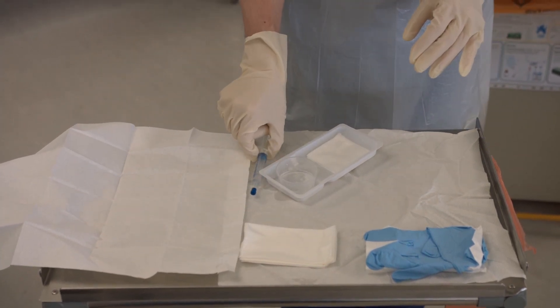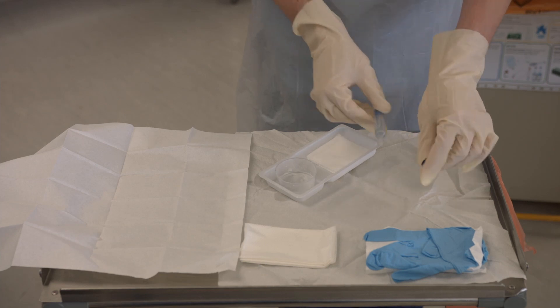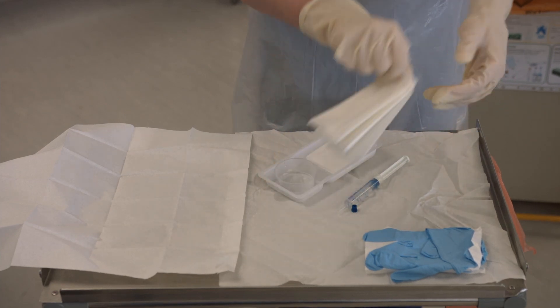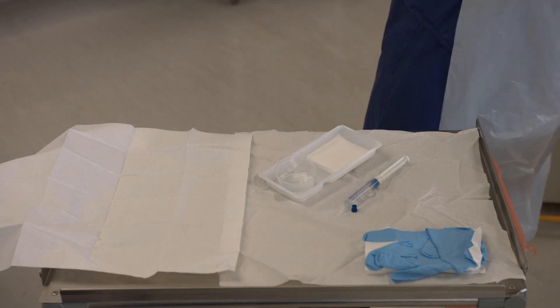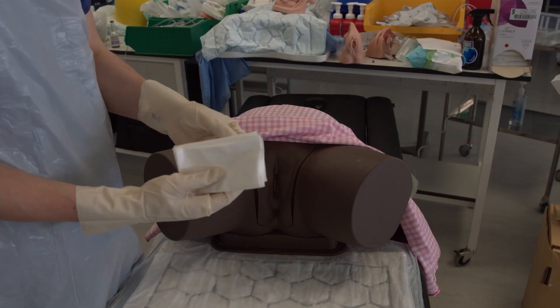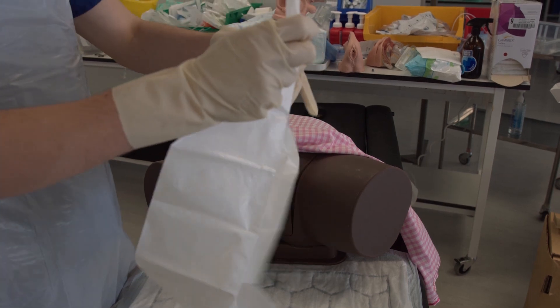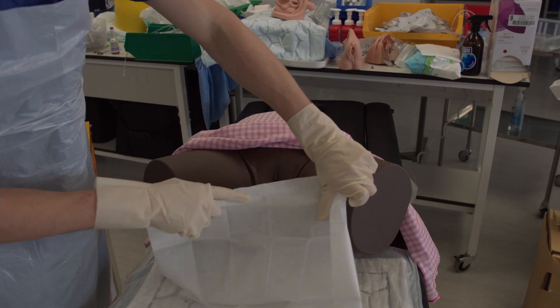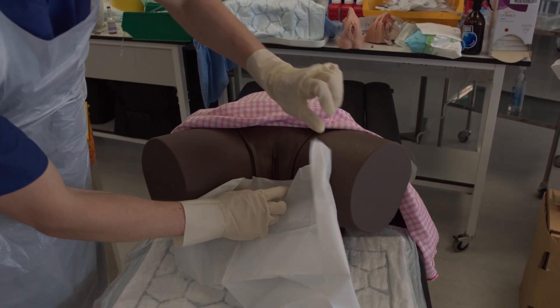Remove the cap to the lubricant syringe, pick up the textured sheet and take it to the patient. Open it out and place it on the pelvis such that the genitals are exposed but the anus is covered and the legs are partially covered.